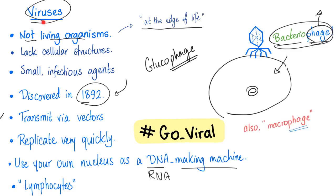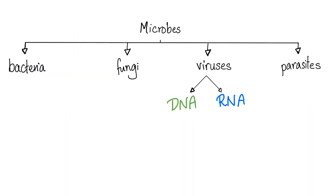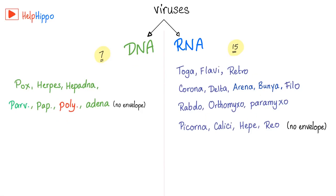Defending your body against viruses is the responsibility of your lymphocytes. We divide viruses into DNA viruses and RNA viruses. Coronavirus is an RNA virus — if you want a mnemonic, corona has an R and RNA has an R. DNA versus RNA viruses is a topic that drives medical students nuts, so check out Help Hippo, a great YouTube channel.